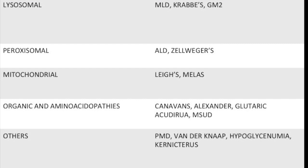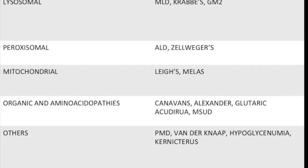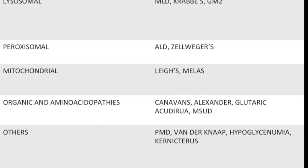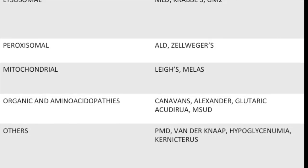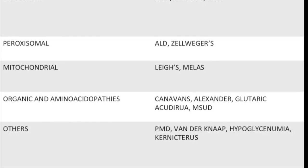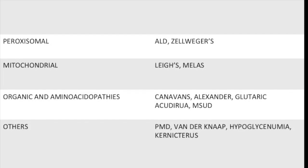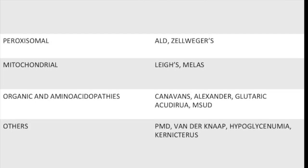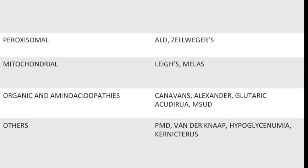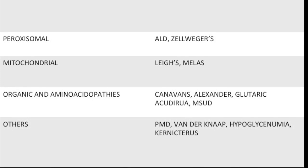Organic and aminoacidopathies are associated with Canavan's disease, Alexander disease, glutaric aciduria — including major subtypes of glutaric aciduria — and maple syrup urine disease. Several unclassified conditions remain, such as Pelizaeus-Merzbacher disease, van der Knaap disease, hypoglycemia, and kernicterus.